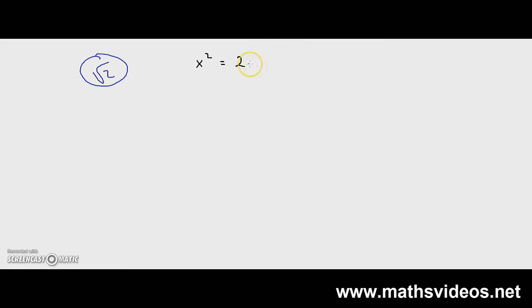Hello guys, in this video I'm going to show you how to find approximations for the square root of 2. In order to get an approximation for the square root of 2, we first need to say that x squared is equal to 2, which basically means that x is equal to the square root of 2.